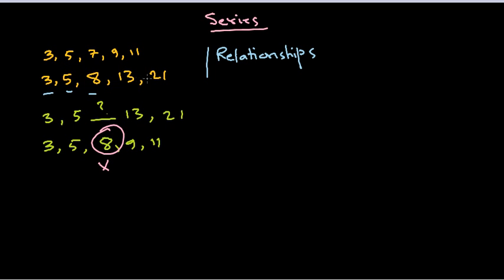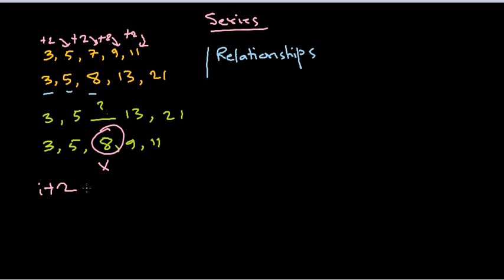Let's talk about the relationship between numbers. For example, in the series 3, 5, 7, 9, 11 — if we add 2 to each number we get the next one: 3 + 2 = 5, 5 + 2 = 7, and so on. So the relationship is simply i + 2, progressing throughout the series.